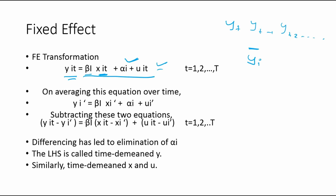Now we subtract the two equations — the original panel equation and the time-averaged equation. The interesting thing is that when you take the difference, the unobserved effect alpha_i gets cancelled out — alpha_i minus alpha_i equals zero. The left-hand side of the resulting equation is known as the time-demeaned y. Similarly, we also have time-demeaned x values and the error term.